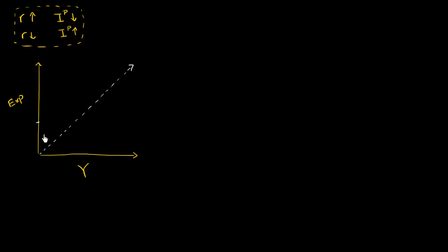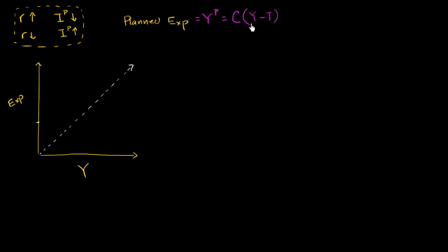The other part of the Keynesian cross is to plot planned expenditures and see where they intersect — that gives us the equilibrium point. We can write planned expenditures as equal to our aggregate consumption, written as a function of disposable income, Y minus T. To be clear, this is not C times (Y minus T); C is a function of Y minus T — give me a Y minus T and I will give you a C.